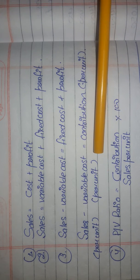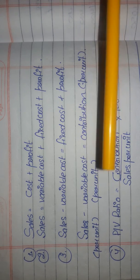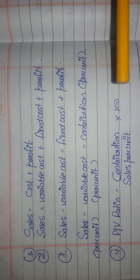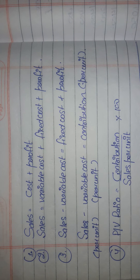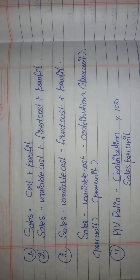To calculate contribution per unit, deduct variable cost per unit from sales per unit. To calculate PV ratio, divide contribution by sales per unit and multiply by 100. This gives you the PV ratio.